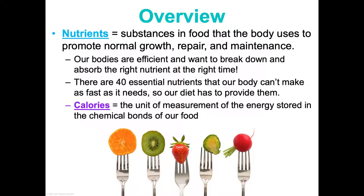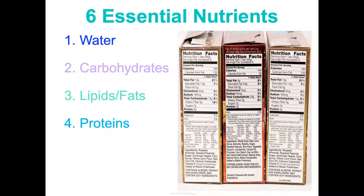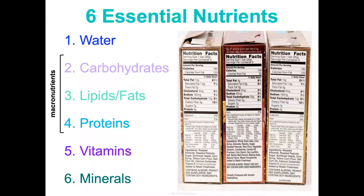Calories are a measurement of energy, and you only need certain amounts, which is why many people count calories. We'll investigate whether that is the best way to diet when we look into fad diets and trends in health and wellness. There are six essential nutrient categories you need to survive: water, carbohydrates, lipids and fats, proteins, vitamins, and minerals. Carbs, lipids, and proteins are macronutrients — you may recognize them as three of the four macromolecules.